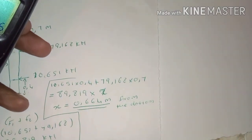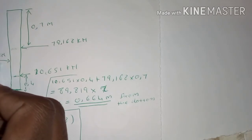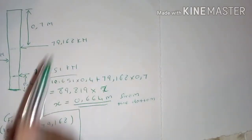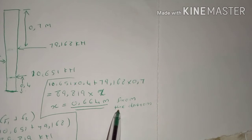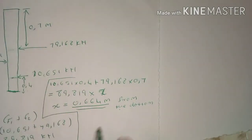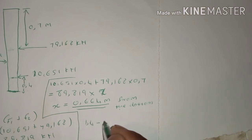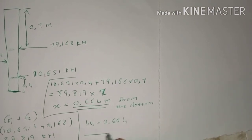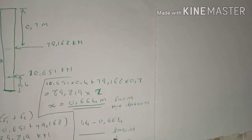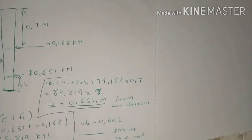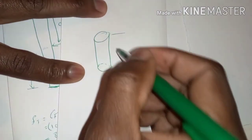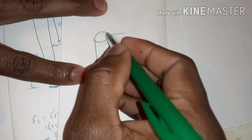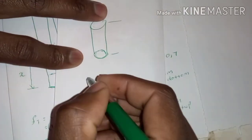If they ask for the position from the top instead of the bottom, simply calculate: 1.4 − 0.664 = 0.736 m from the top (surface). Always pay close attention to what reference point the question specifies, and note the container shape — they may give a square container rather than a circular one.